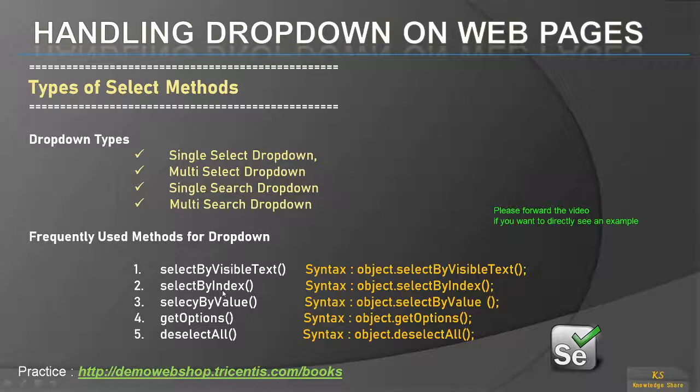These are the frequently used methods. When you do testing in real time you will be using these methods to get all the options from the dropdown, to deselect the dropdowns, or to select by visible text. If you know the number you can select by index.